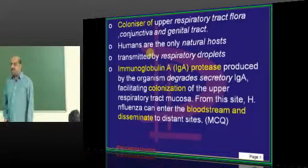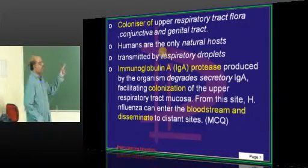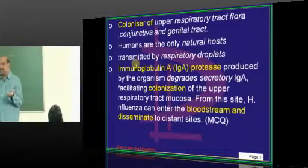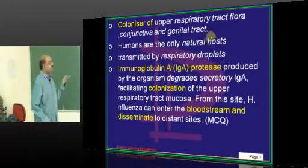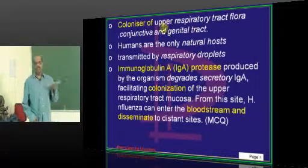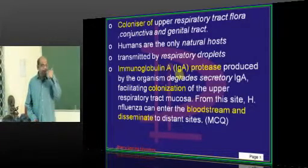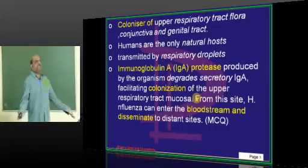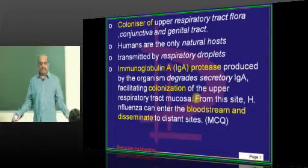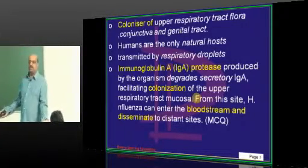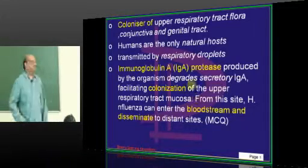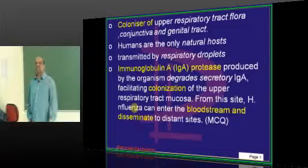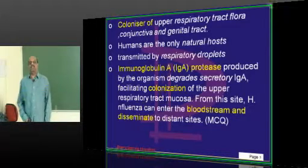H. influenzae is otherwise a normal colonizer — in our conjunctiva, genital tract, and respiratory tract. It is part of the upper respiratory tract flora. The only natural host is humans, and it is transmitted via nasal droplets.